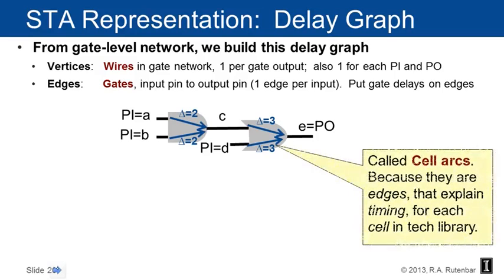A bit of terminology: those edges that go from the gate input to the gate output are called cell arcs. They're called arcs because arc is just another word for edge, and they explain the timing. We build these for every cell in our technology library — a library of standard cells — which is why they're called cell arcs. They're built from input pins to output pins for the cells in the technology library.